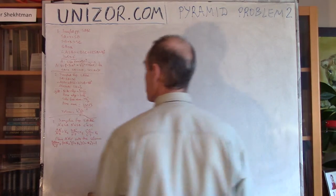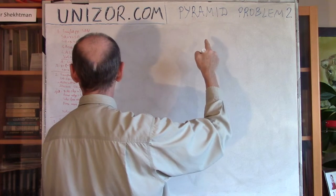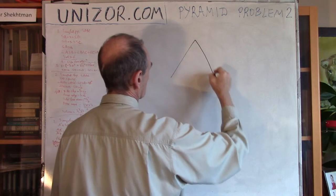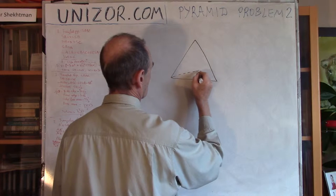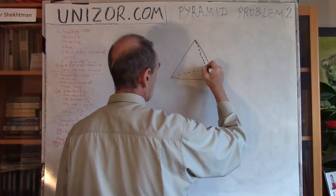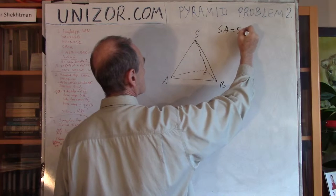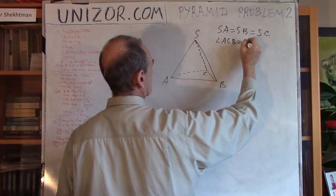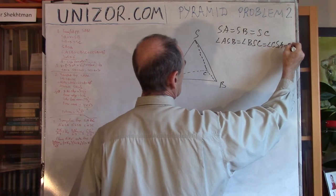So what's the problem? The problem is as follows. You have a triangular pyramid with equal side edges and equal angles of the faces at the top — all right angles. S, A, B, C. So SA equals SB equals SC. Angle ASB equals angle BSC equals angle CSA equals 90 degrees.